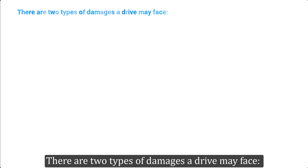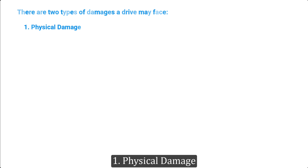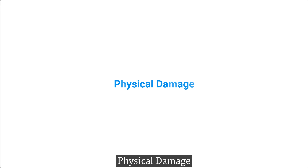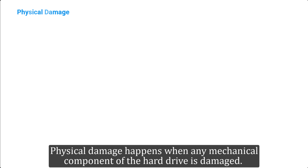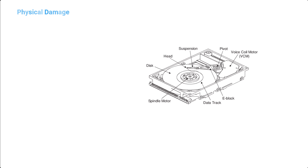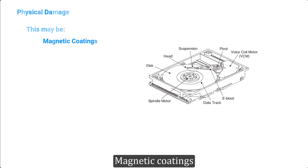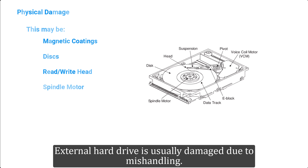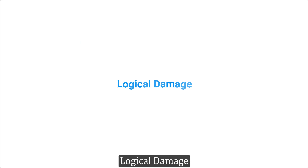There are two types of damages a drive may face: physical damage and logical damage. Physical damage happens when any mechanical component of the hard drive is damaged — this may be the magnetic coatings, discs, read/write head, or spindle motor. External hard drives are usually damaged due to mishandling.